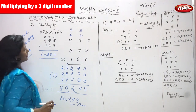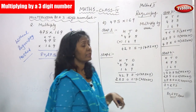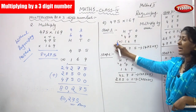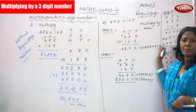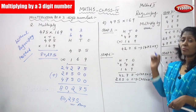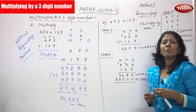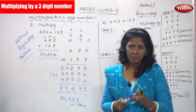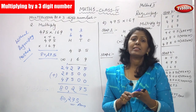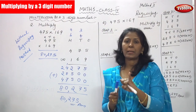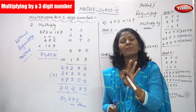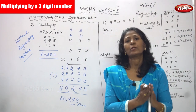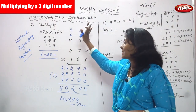Method 1 is without regrouping. Now we are going to see Method 2: the same question, but we follow Step 1, Step 2, Step 3, and Step 4 — multiply each digit. Step 1: multiply by 1's. Step 2: multiply by 10's. Step 3: multiply by 100's. Step 4: add the products. That is the regrouping method.